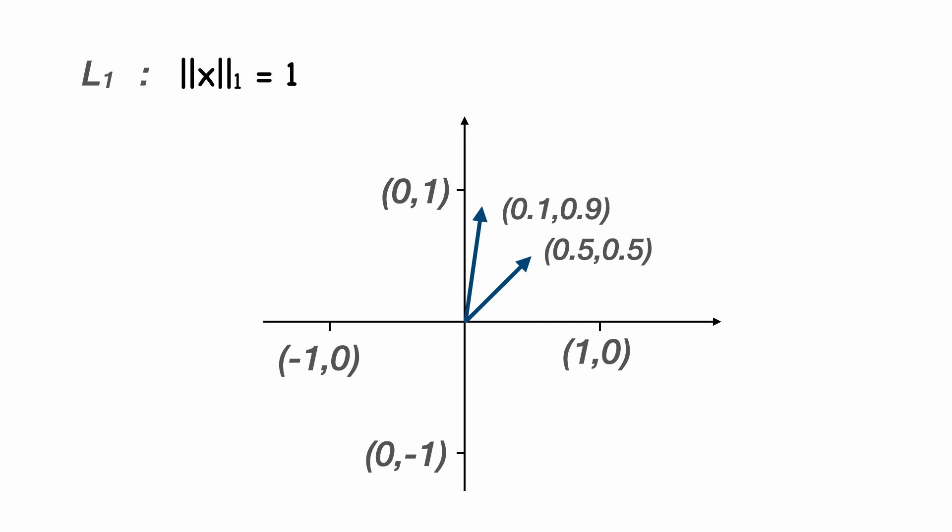A vector with a y coordinate of 0.25 with an x coordinate of 0.75 will also give us a vector with an L1 norm of 1.